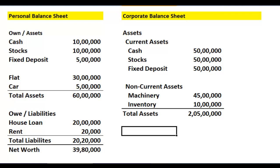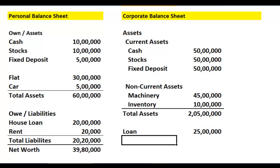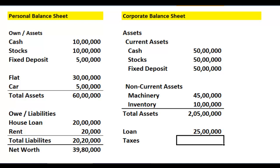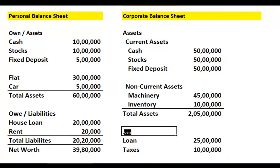A company also has liabilities. In Domino's case, they have a loan on which they pay interest. Let's say this company has a loan of 25 lakhs. The company also owes taxes to the government — it pays taxes once or twice a year, but in the middle of that period it hasn't paid yet, so it accumulates those taxes. Let's say the company owes the government 10 lakhs in taxes. These are what are called liabilities.